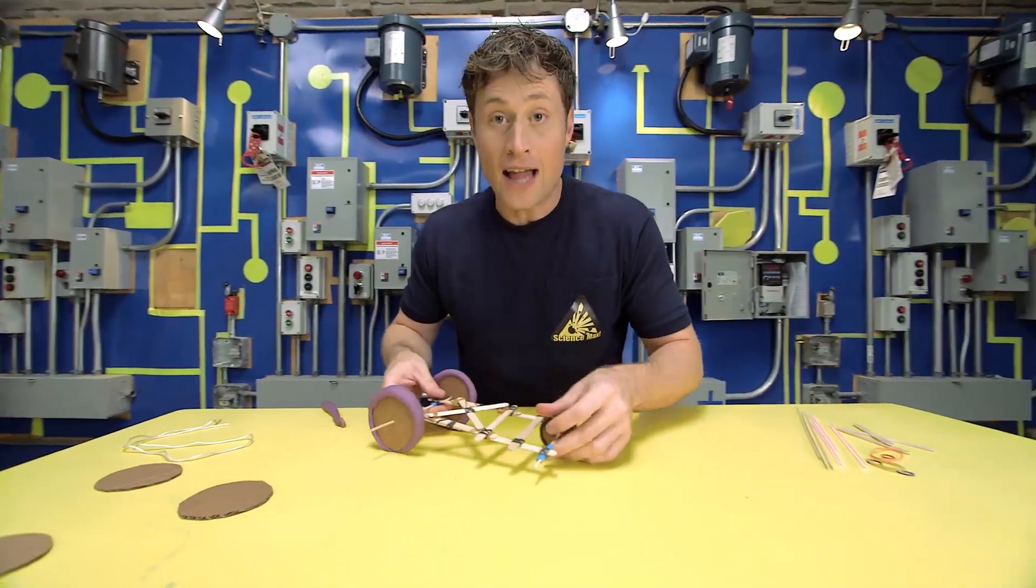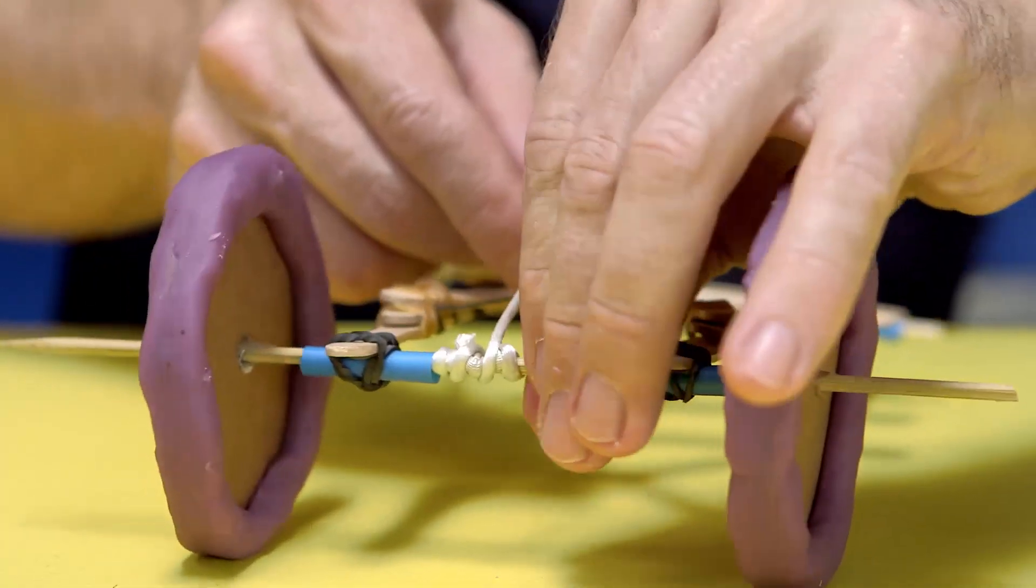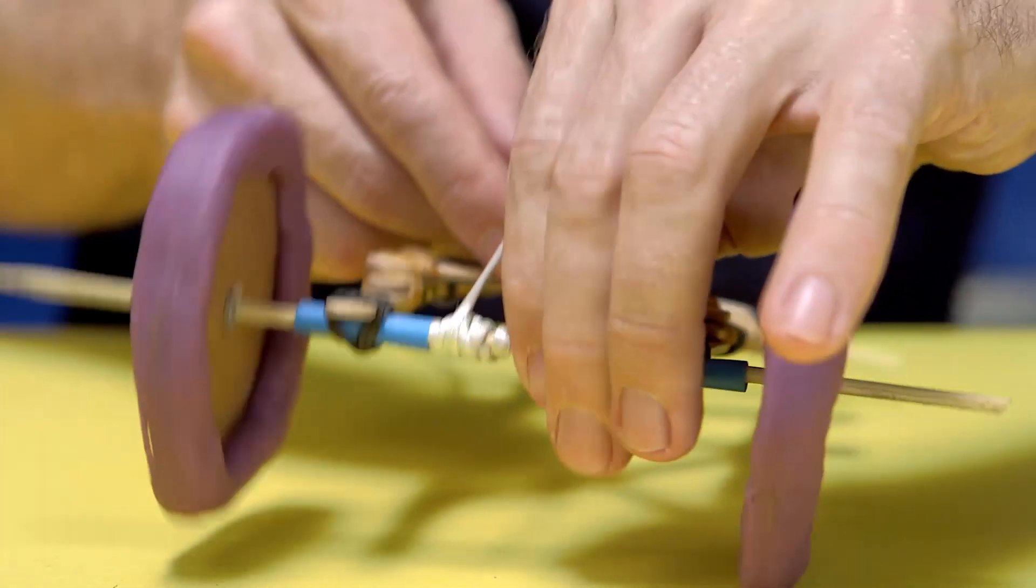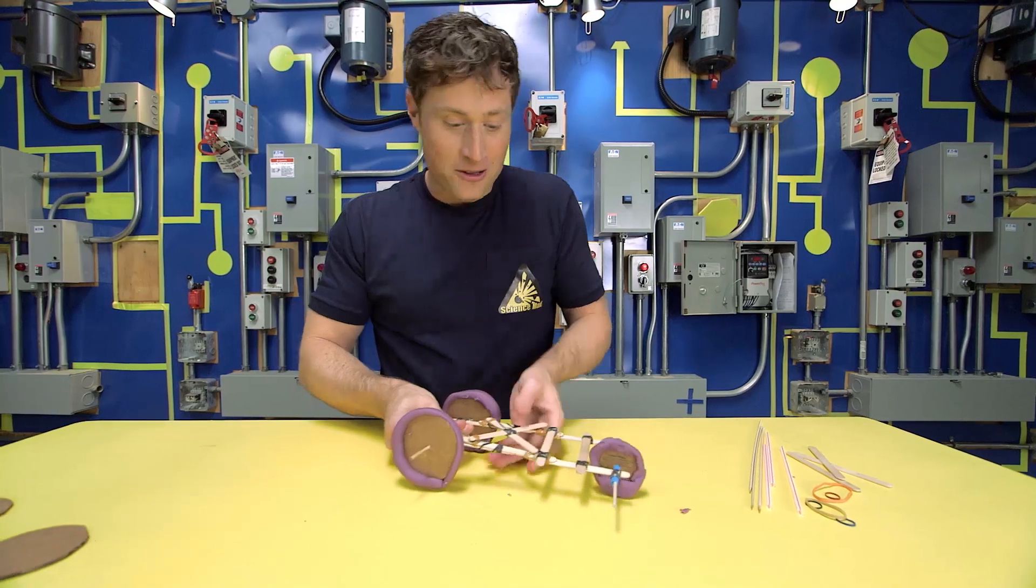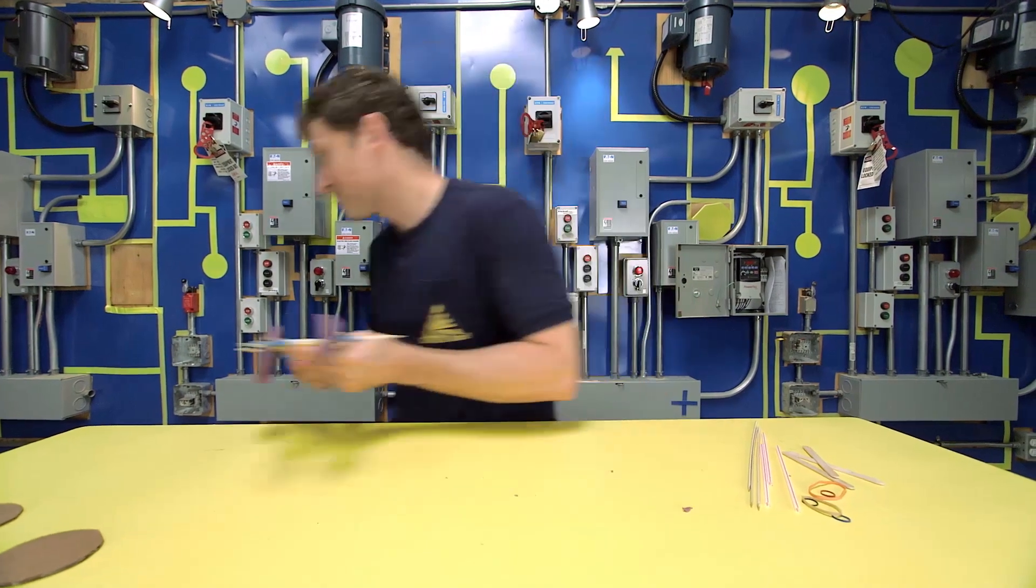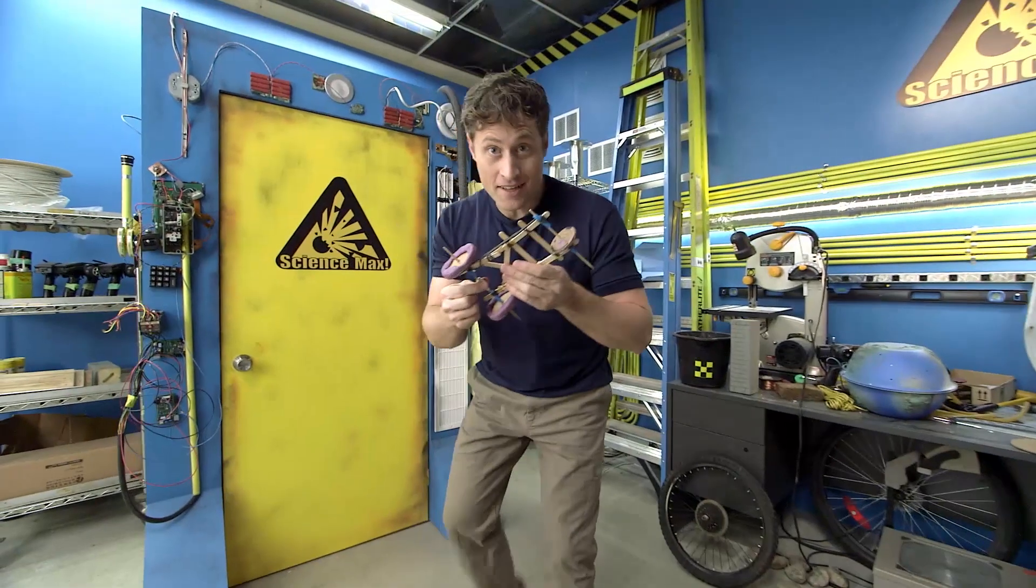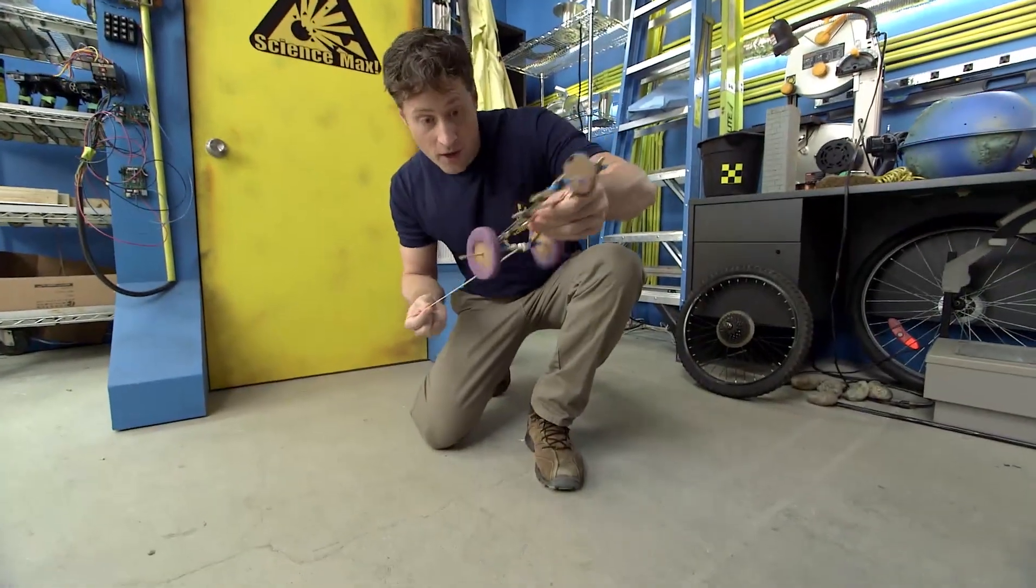Now I have to wrap the string around the back axle just like that. Let's try it out. Let's give it a shot and see how it works. Pull on the string, get the wheels going real fast, and there it goes!